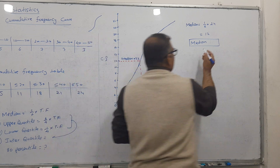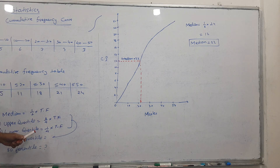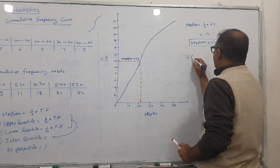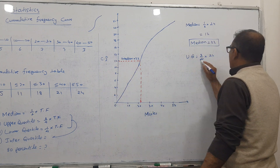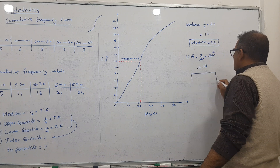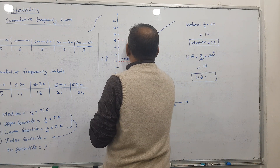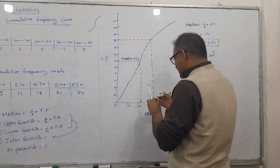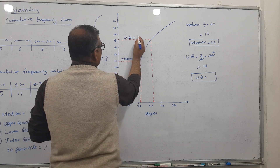For the upper quartile: ¾ × 24 = 18. But 18 is not the answer — it's the pointer. From 18 on the y-axis, go across to the graph and come down. The answer is approximately 33. So the upper quartile is 33.